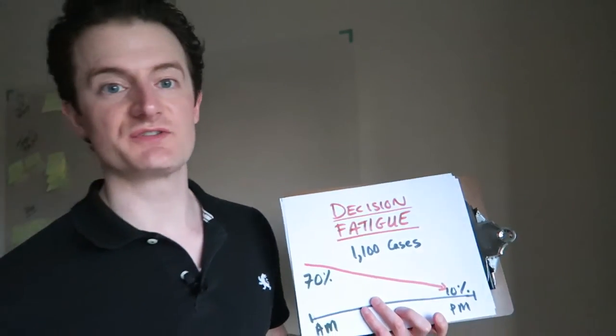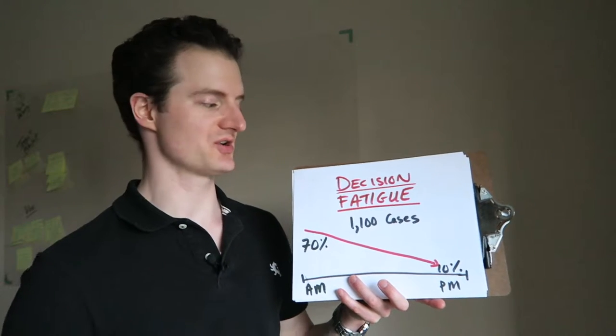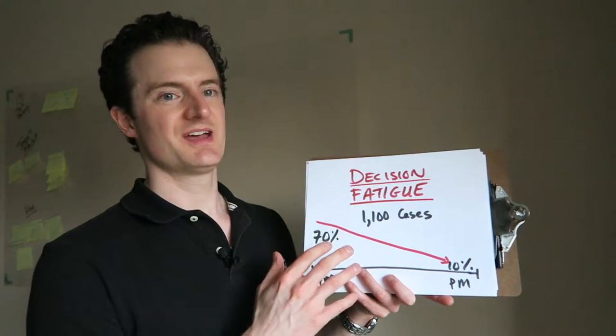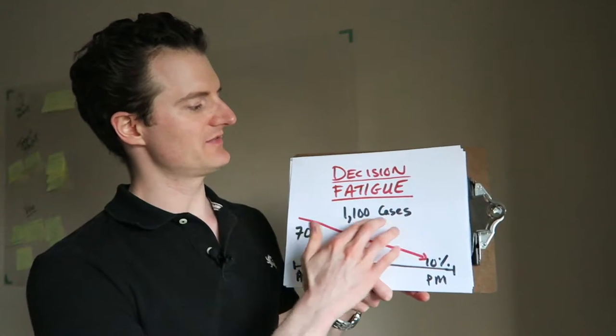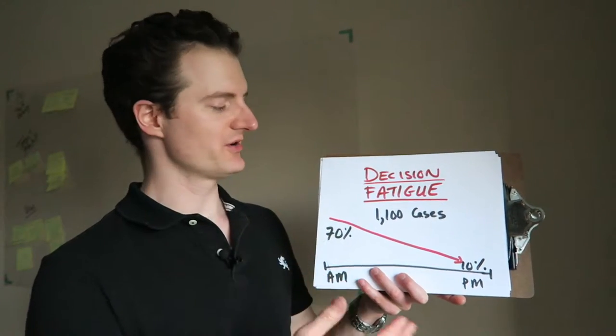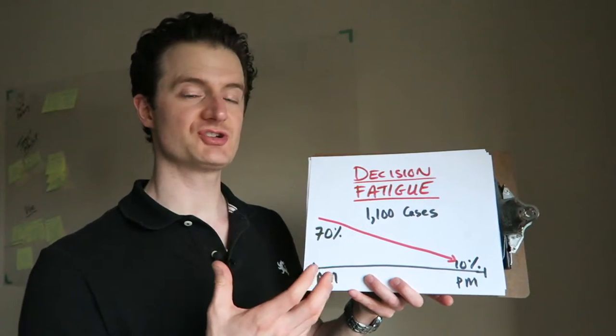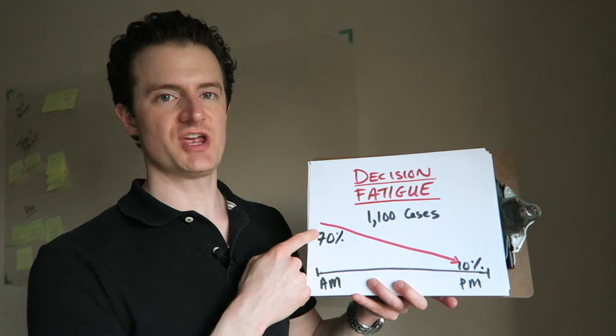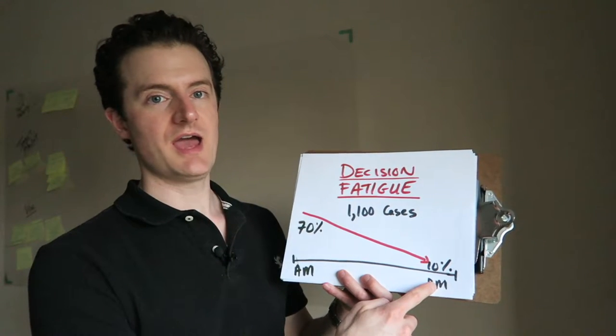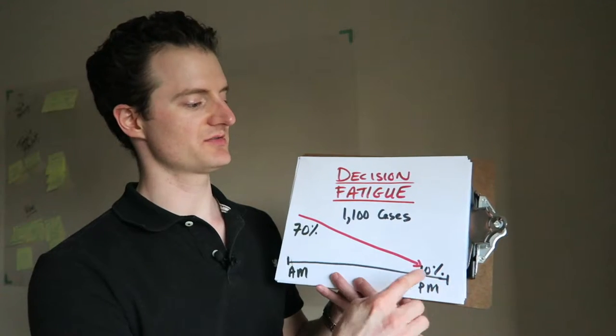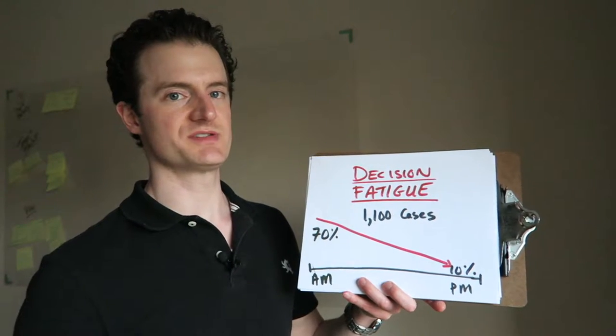Now, you've maybe heard of Decision Fatigue before. It was popularized in the book Essentialism by Greg McKean, and might also be mentioned in Power of Habit by Charles Duhigg. There's a very famous research study that looked at parole cases in Israel. It looked at 1,100 parole hearings and the researchers noticed that when the parole hearing happened in the morning, when all the parole officers were fresh and rested, there was about a 70% chance that the inmate would get out on parole. However, if that same inmate were to come in at the end of the day after the parole board had been hearing cases all day long, there's only about a 10% chance that that inmate would get out on parole. And the only thing the researchers could attribute it to was this idea of Decision Fatigue.